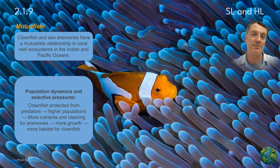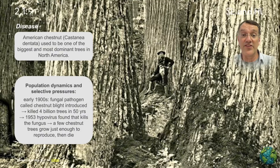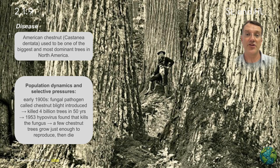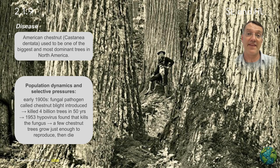Both species equally benefit. Diseases can dramatically alter ecosystem composition and structure. Here in the background of this slide you can see these gigantic trees — this is the American chestnut. At one point, it was the most dominant tree in eastern North America, and it was a fantastic wood used for building homes and furniture.